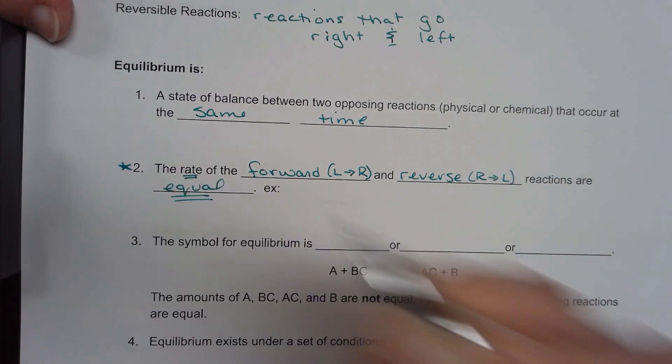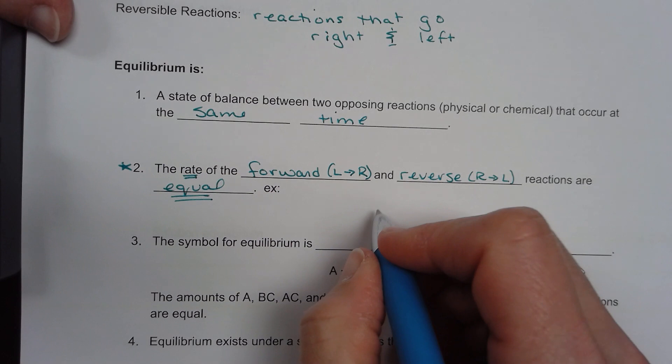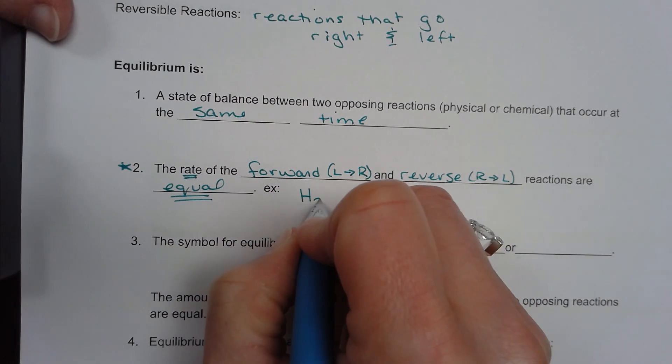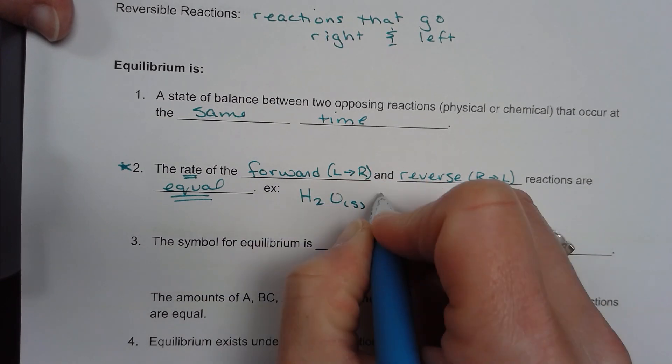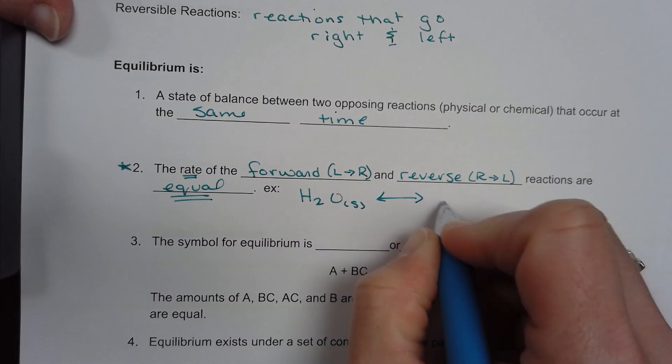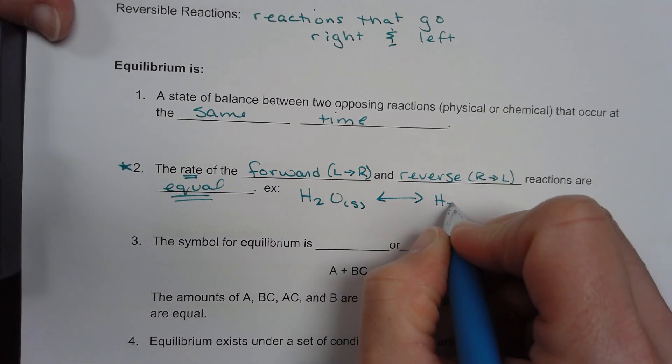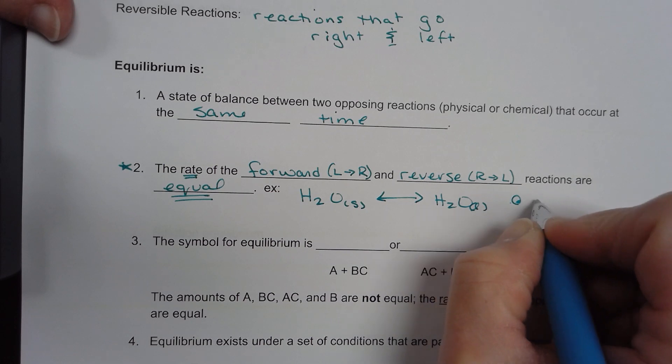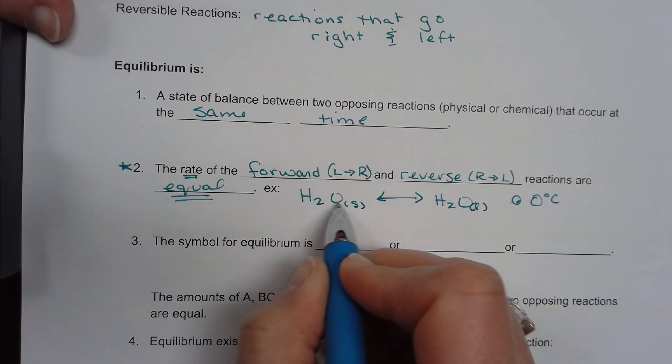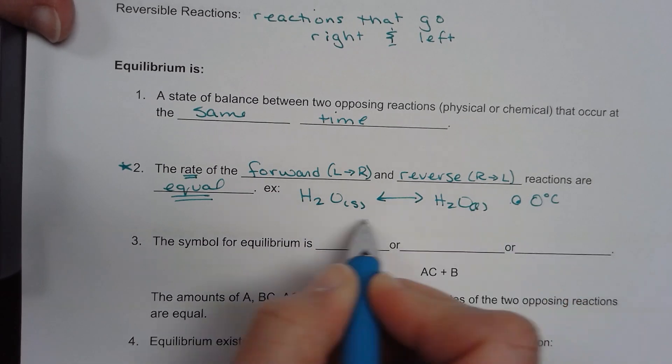Star next to that. Meaning, H2O solid, H2O liquid, at zero degrees Celsius. We have the same amount turning to a liquid as we do to a solid.